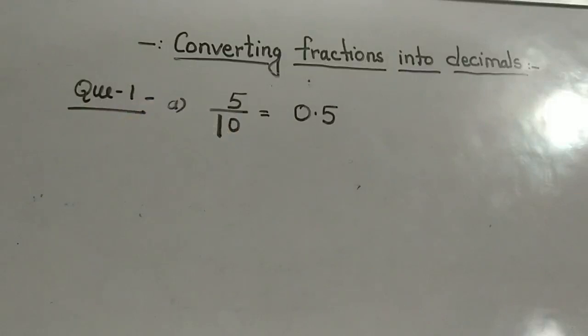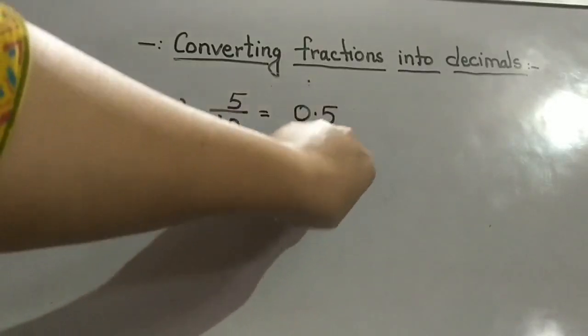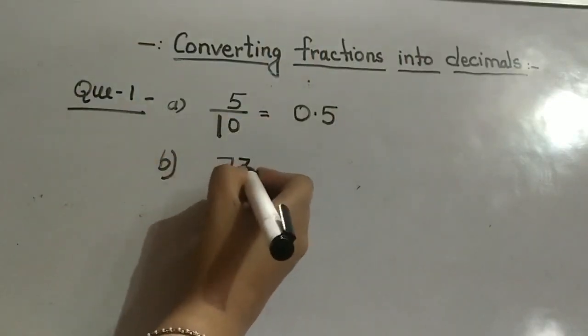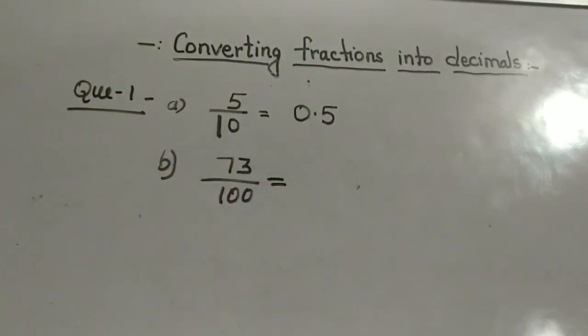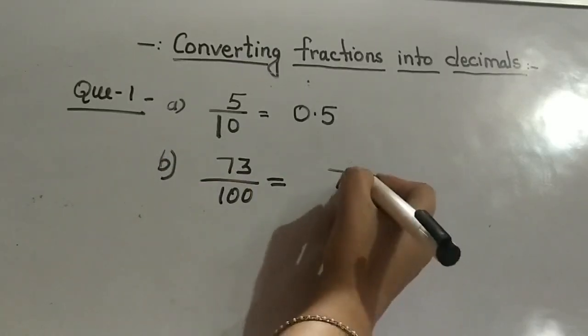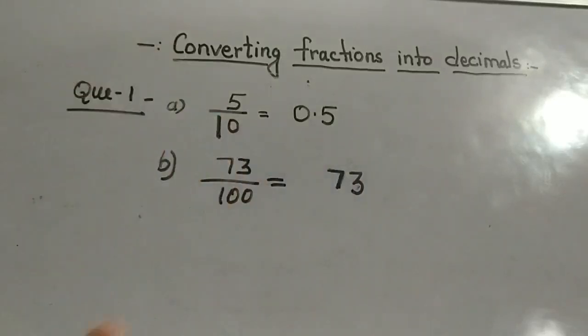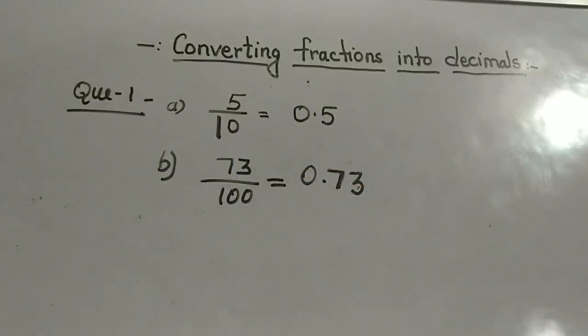See another example. Suppose I am writing here 73 upon 100. So how many zeros are there in the denominator? Two. So how many decimal places should be there? Two. And how many digits we have? Two. So the point will be before 2 digits. This will be 0.73.